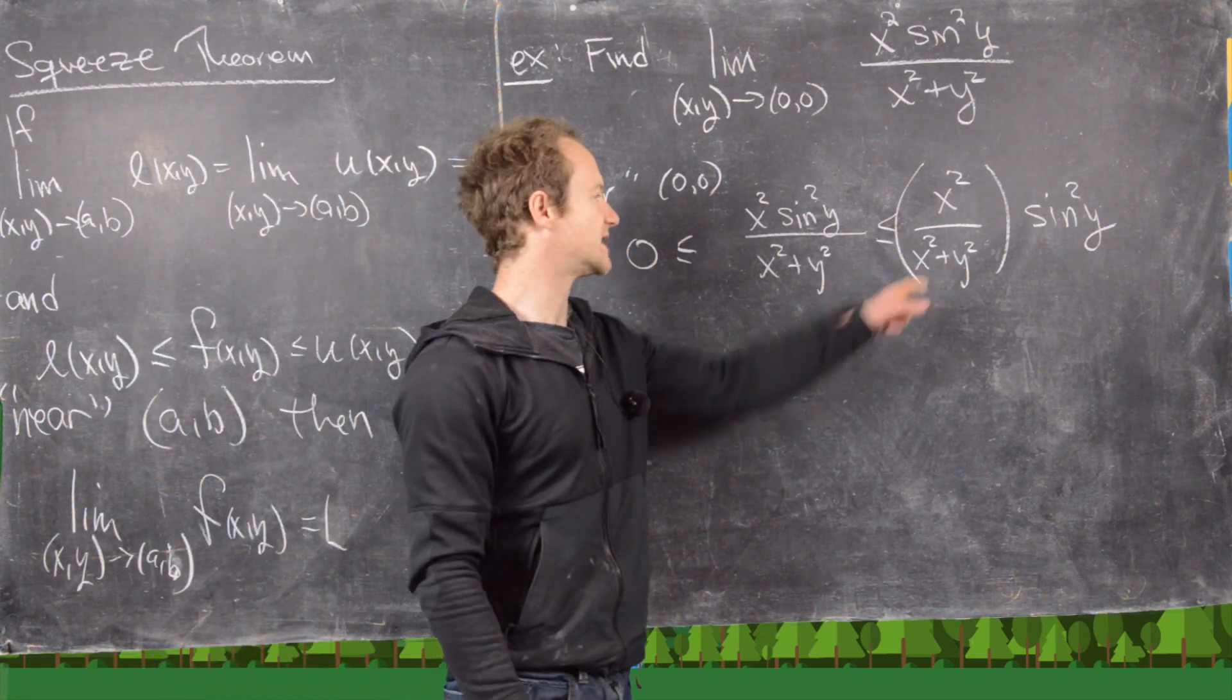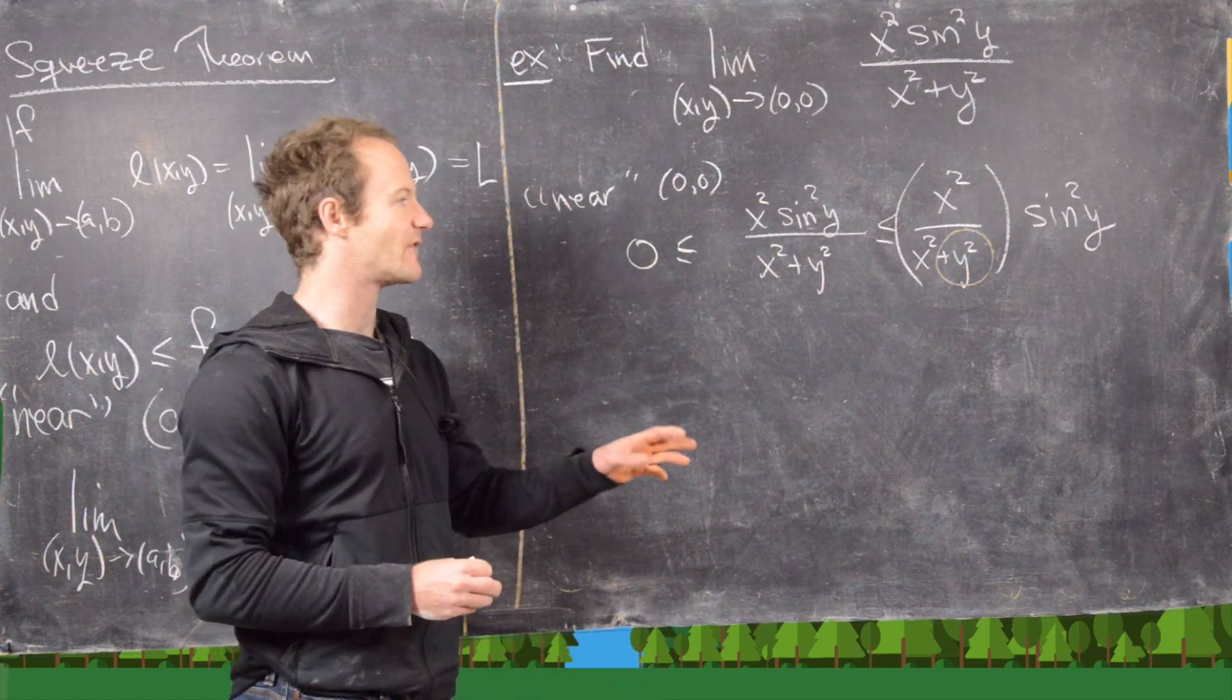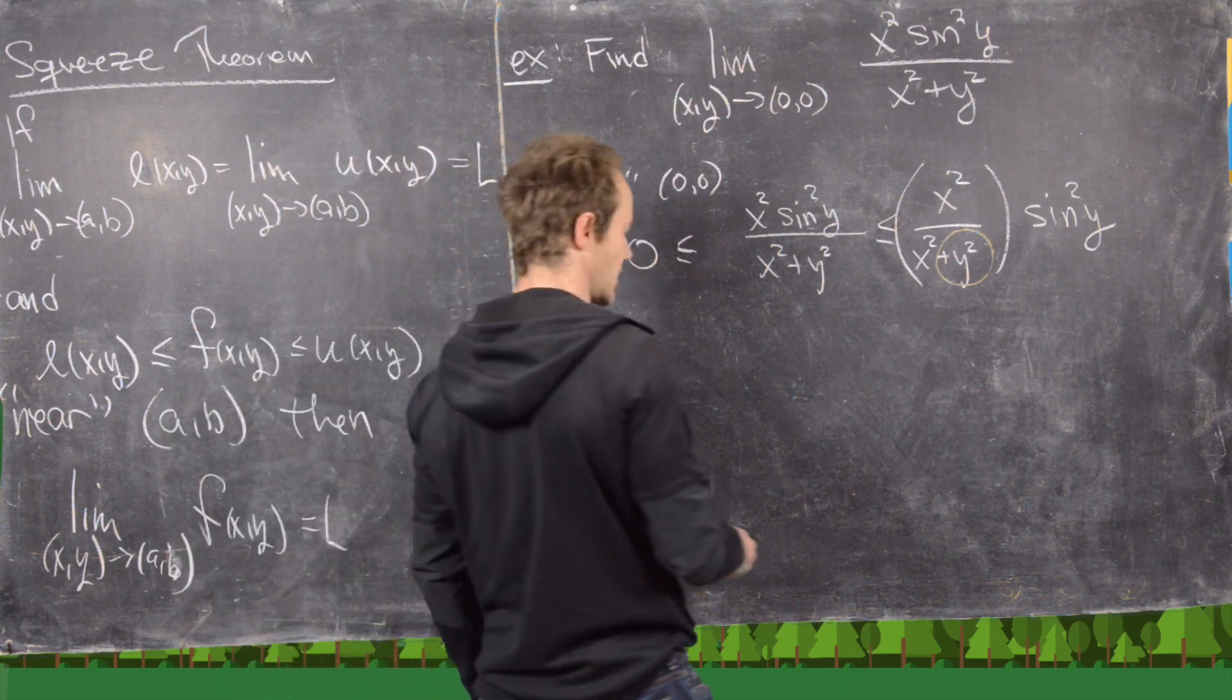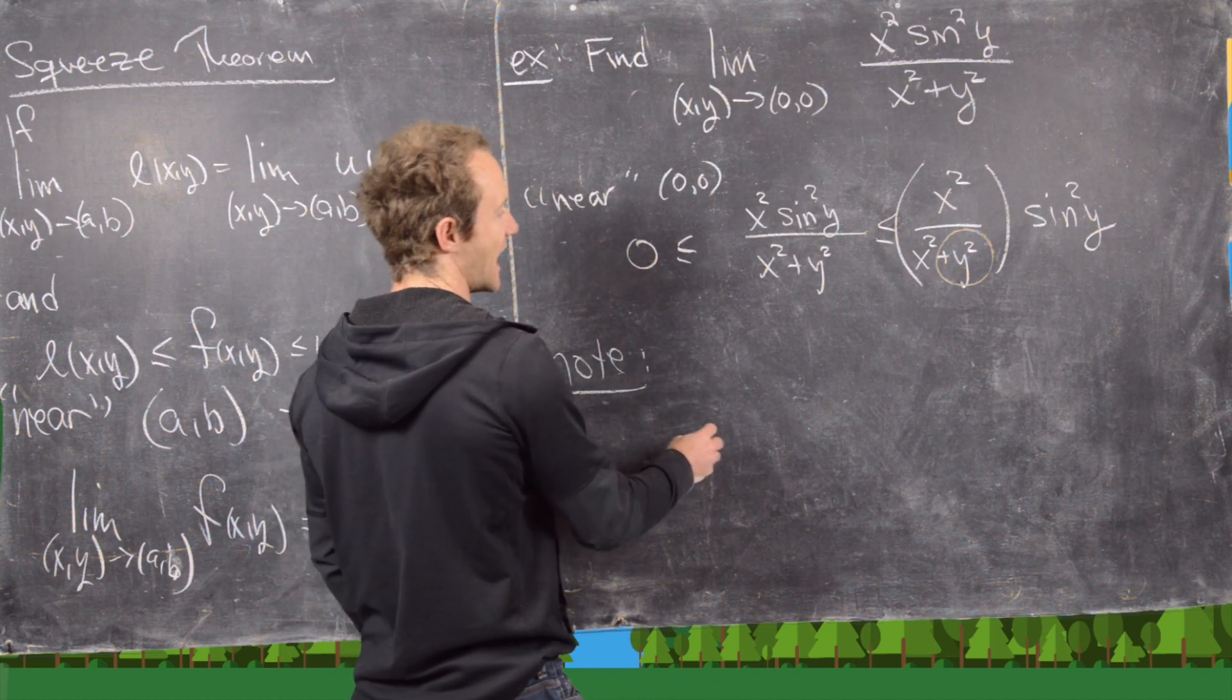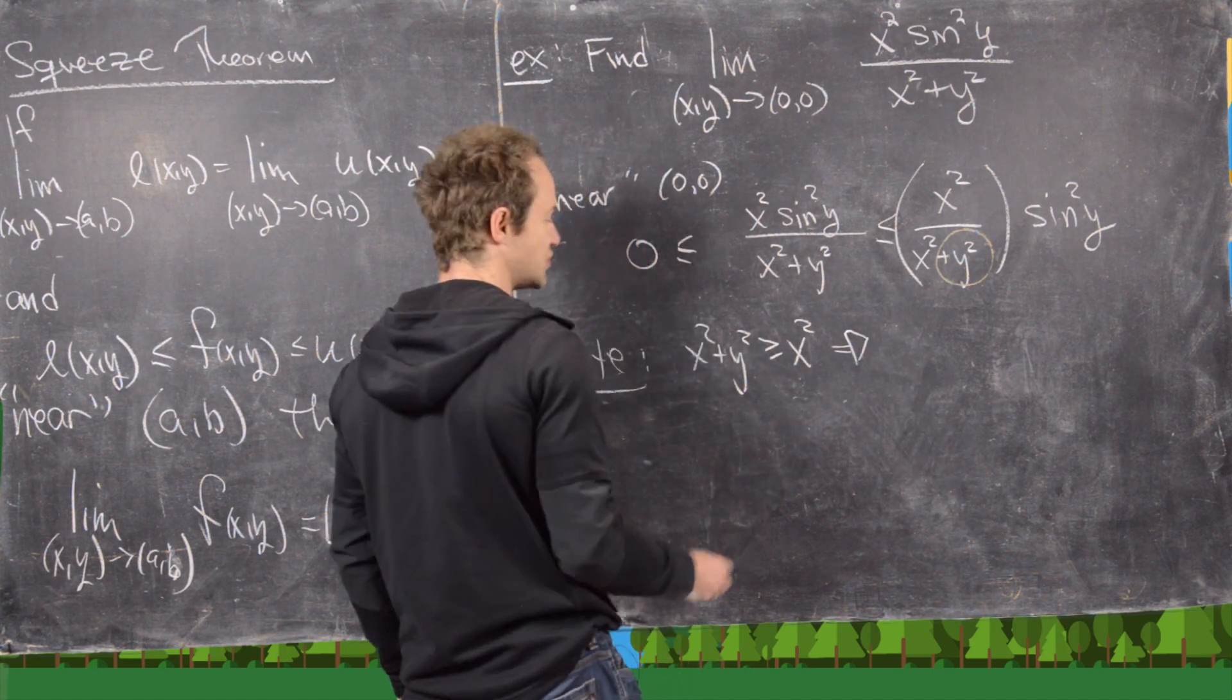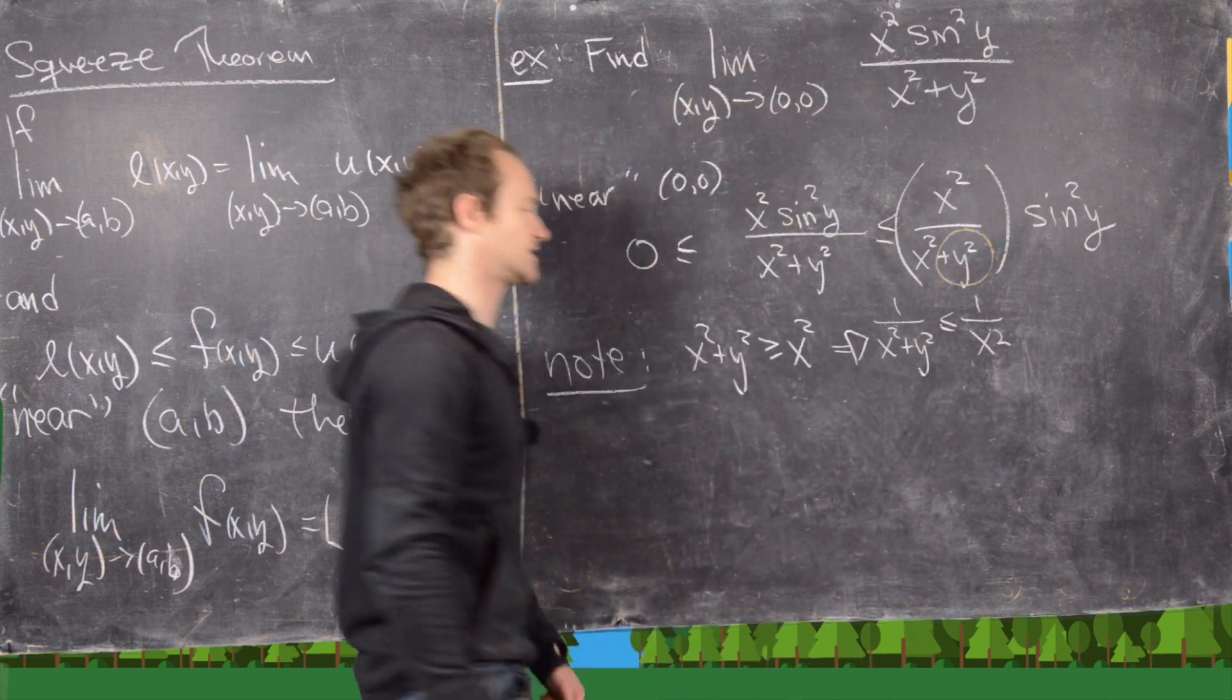But now what we can notice is that if we remove the denominator part here given by this plus y squared, then we have made the denominator smaller. And if we make the denominator smaller, we make the whole thing bigger. So here we're using this fact that x squared plus y squared is bigger than or equal to x squared, which implies that 1 over x squared plus y squared is less than or equal to 1 over x squared.